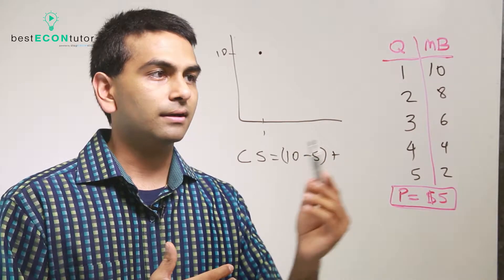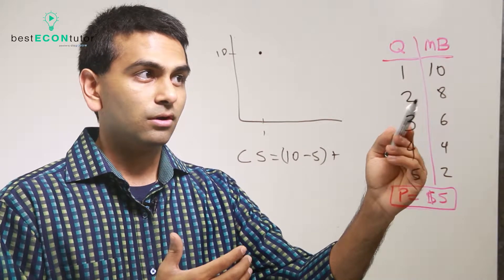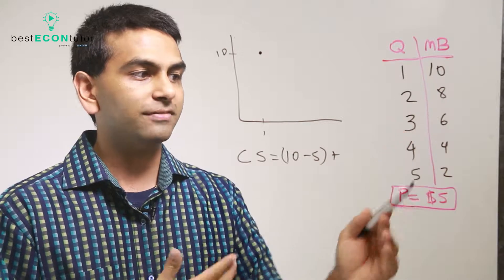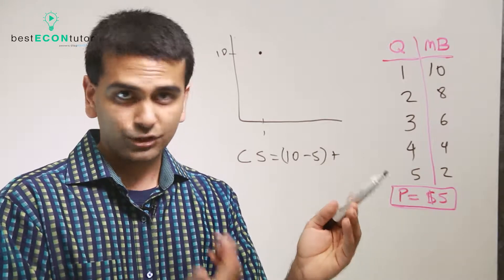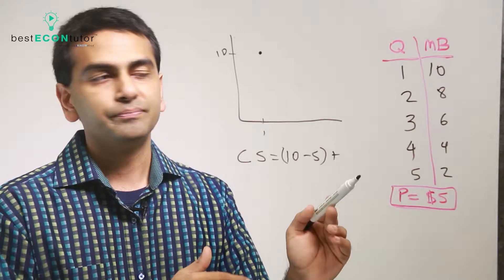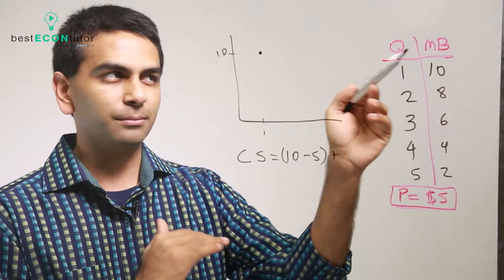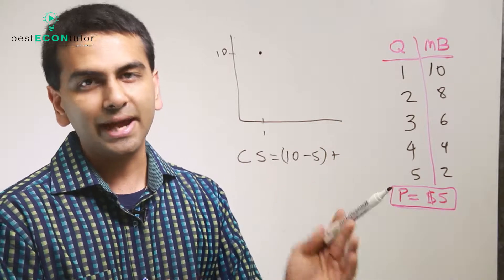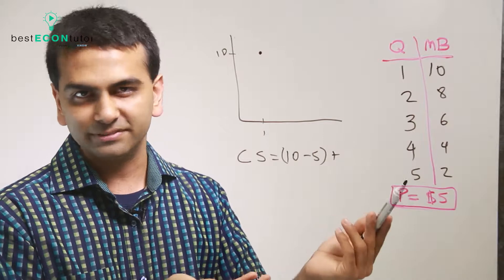Would you buy the second item? Here's the thing: as long as your marginal benefit is greater than the price of the good, you'll buy it. If it was any less, you wouldn't buy it. Even if it was equal — if some good gives you a marginal benefit of exactly five — you'll still buy it anyway, you just get no consumer surplus out of it.